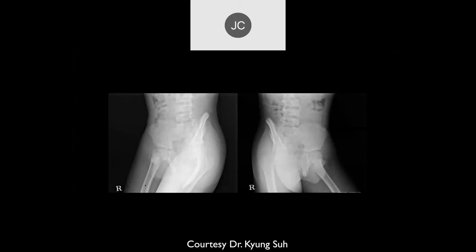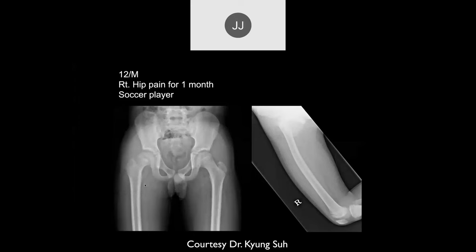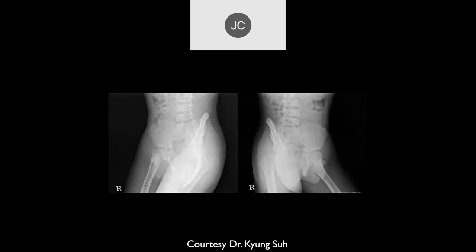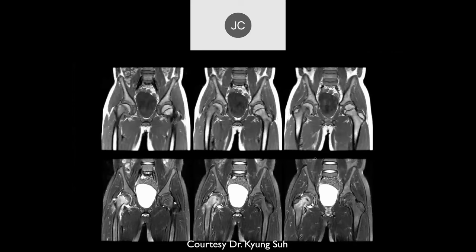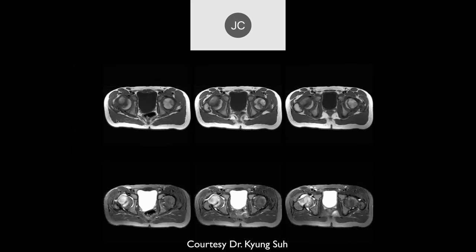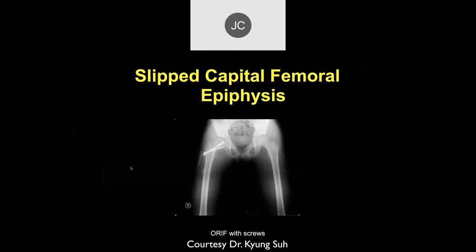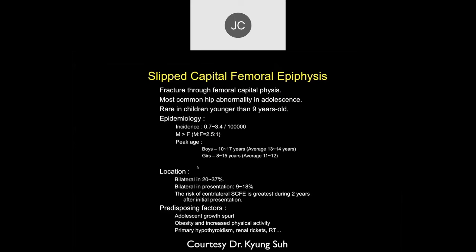How old was this patient? Twelve. That's about right — soccer player. On the obliques we can see the SCFE and the normal side. Here's the MR scan. With MR, we also see edema within the bone, slipped capital femoral epiphysis, edema on either side of the growth plate. Further examples in the axial plane of the slippage. It was fixed by two screws — the fixation looks good.